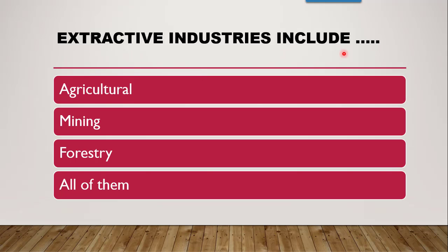The next question is: extractive industries include — whether it is agricultural industries, mining industries, forestry, or all of them. The correct answer is all of them. Extractive industries, as the name suggests, are concerned with the extraction or drawing of products from natural sources. Agricultural industry, mining, and forestry all involve drawing products from natural sources.